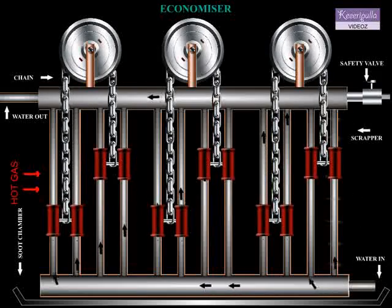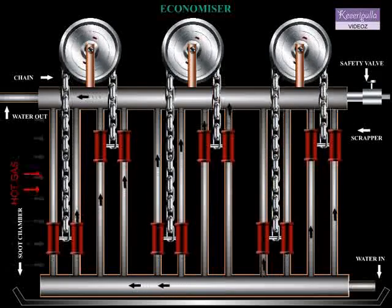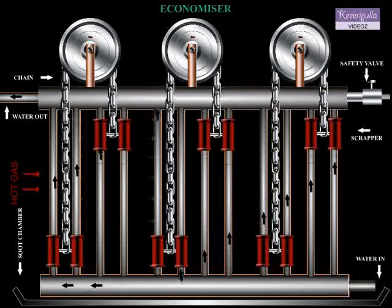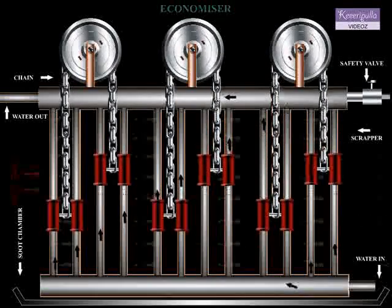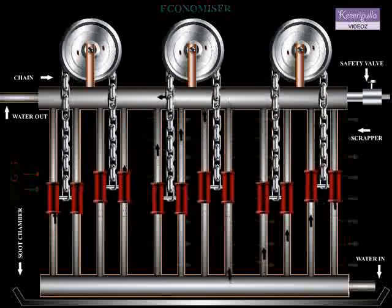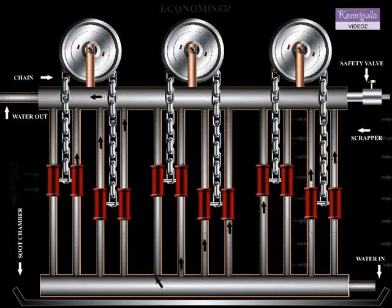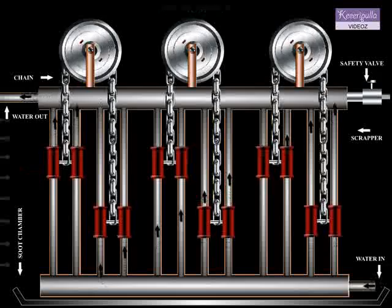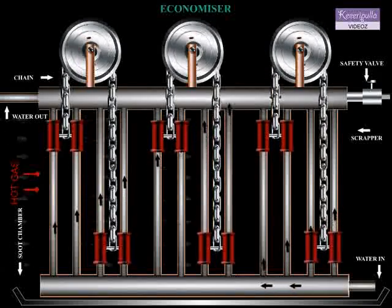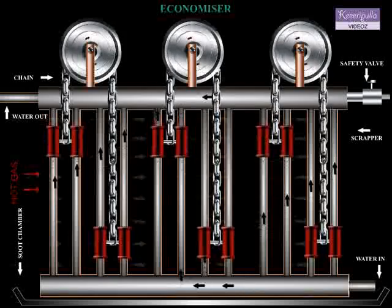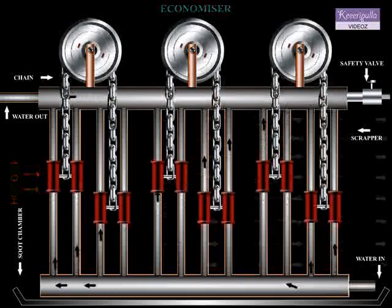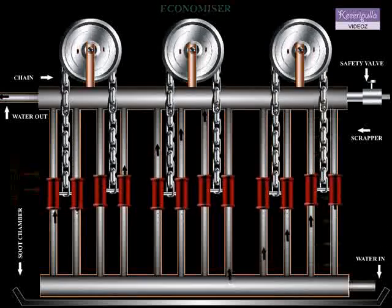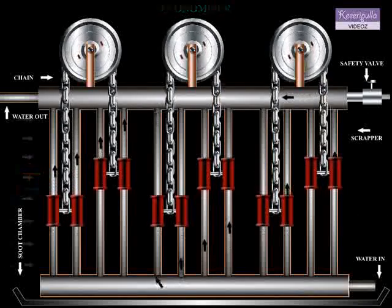The soot removed from the pipes is collected in a soot chamber situated below the bottom header and removed periodically.